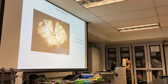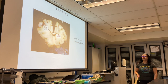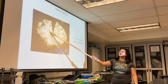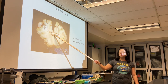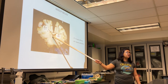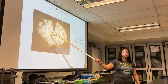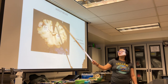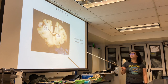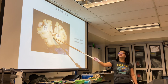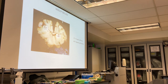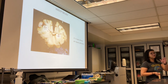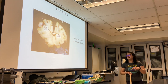Here's a great corpus callosum picture — notice how it's like a little bridge. The corpus callosum allows communication between the left and right sides of the brain. The septum pellucidum is a thin membrane that separates the left lateral ventricle from the right lateral ventricle.